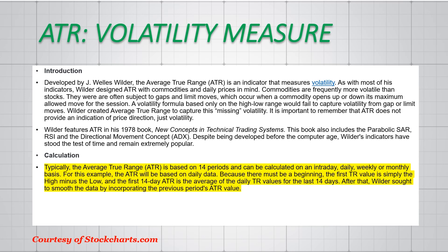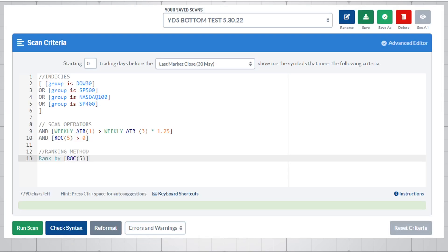We're going to use the ATR to look for extreme or significant jumps in the ATR value as a method of determining whether something has stopped and reversed, or entered a period of capitulation — something different has happened. Here's the code we'll be working with today. We're going to scan our indices: Dow, S&P, NASDAQ, and SP 400 (that's the mid caps). We're going to look at a weekly ATR.